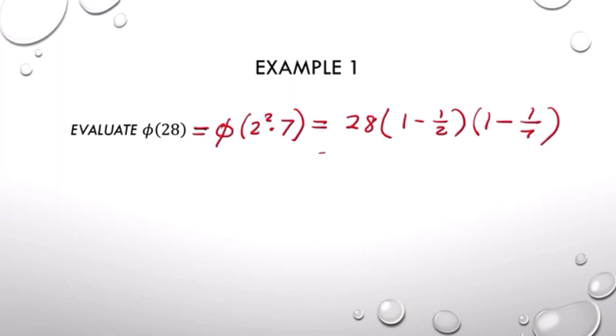We get a factor for each one of the primes. So phi of 28 is 28 times 1 minus 1 half, times 1 minus 1 seventh. So it's 28 times 1 half and 1 minus 1 seventh reduces to 6 sevenths. And when you calculate that, you get 12.